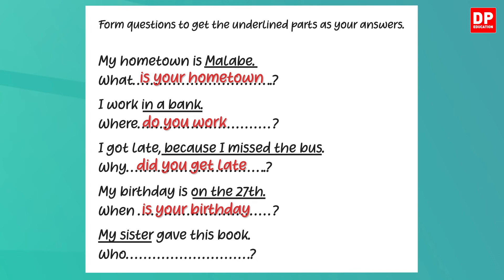Now the last one: My sister gave this book. The underlined part is 'my sister' and the question word is 'who.' As you can see, the question is in simple past tense. But as the answer 'my sister' is in the subject position, we don't add 'did,' although the statement is in past tense. So the correct question is: who gave this book?